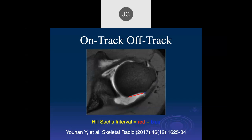The next measurement needed is the Hill-Sachs interval: the width of the bony impaction plus the distance from the intact cortical bone to the edge of the rotator cuff insertion — primarily the infraspinatus tendon. In practice, measure from the medial edge of the Hill-Sachs impaction injury up to where the cuff inserts into bone. That's called the Hill-Sachs interval.